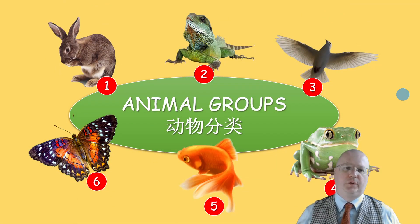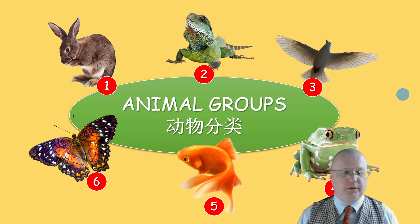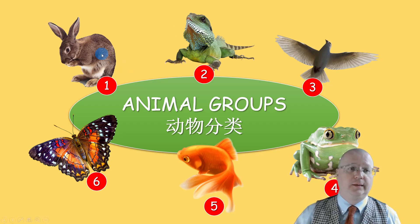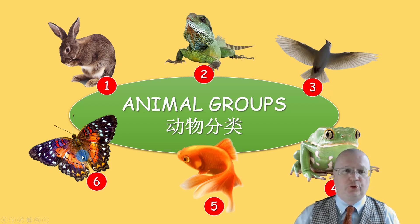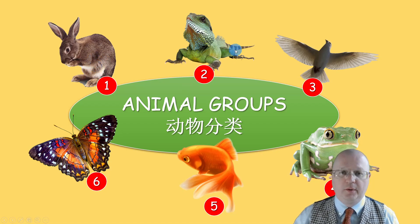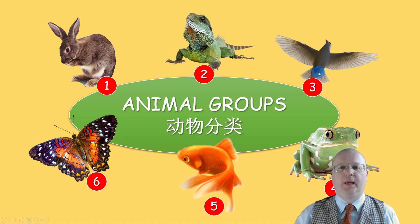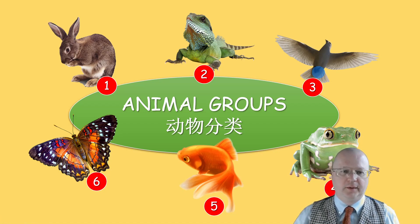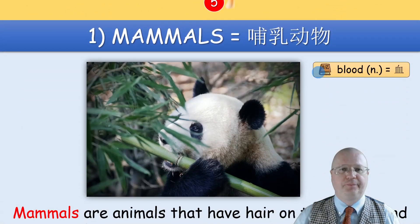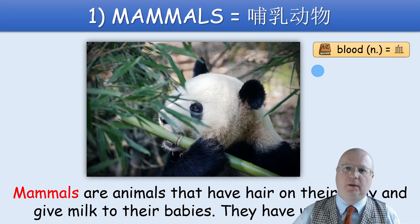You can elicit responses from your students — ask them what they see, what is number one, number two, number three, and so on. In this lesson, we are learning six animal groups, and you start teaching mammals.